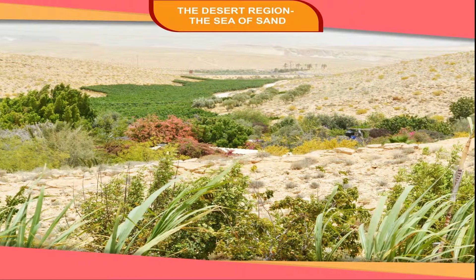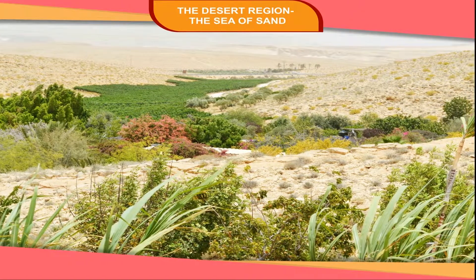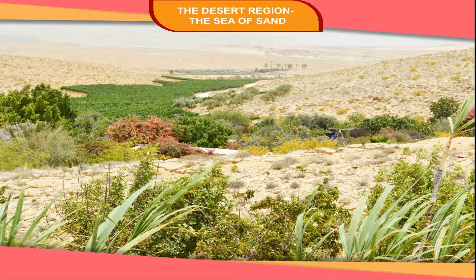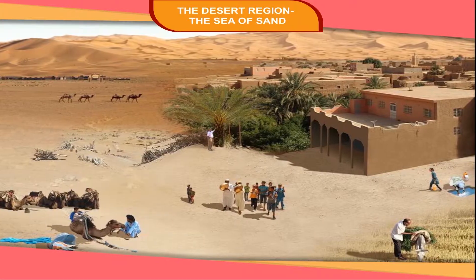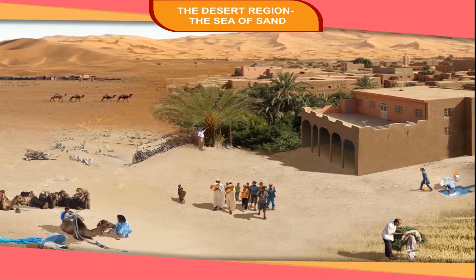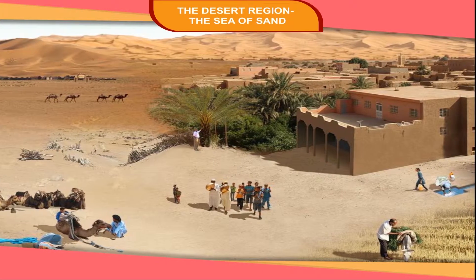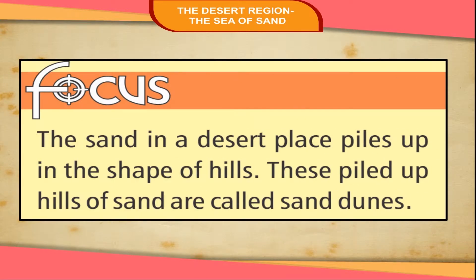But at some places, we can find natural water marked with green grass and date palm trees. This fertile place in the desert is called an oasis. Some villages are found near oasis. The sand in a desert place piles up in the shape of hills. These piled up hills of sand are called sand dunes.